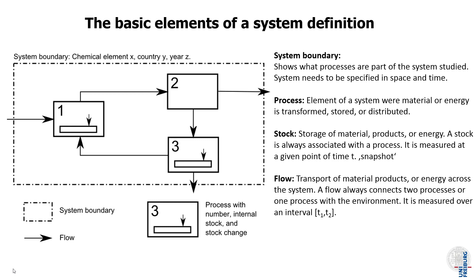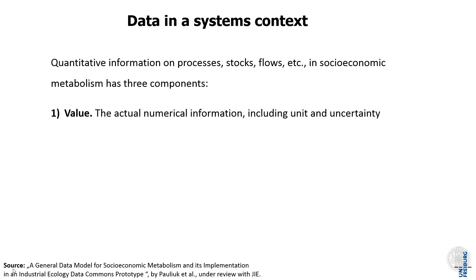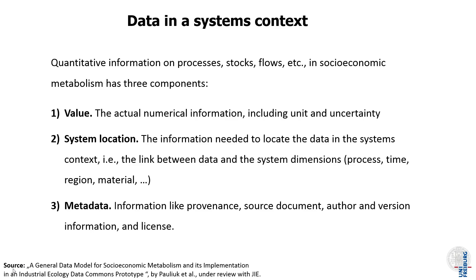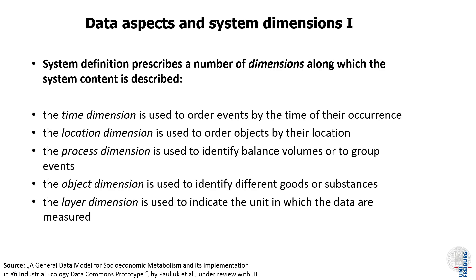At the very basic level, we have the concept of the system definition: the system has a boundary, processes, stocks, and flows. The data we deal with in industrial ecology has three components. First, the actual values like 2000 kilotons or 50,000 megatons per year. But these values don't mean anything unless located in the system — I need to put the number into a system context. And I need metadata such as the provenance, version, and licensing of the data.